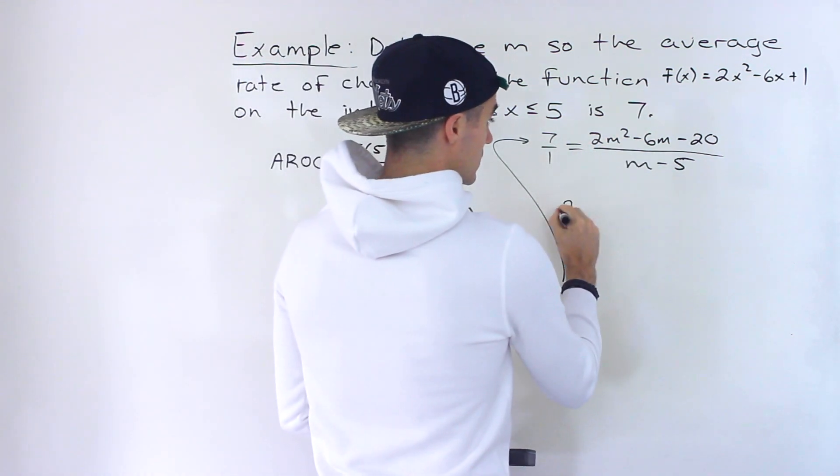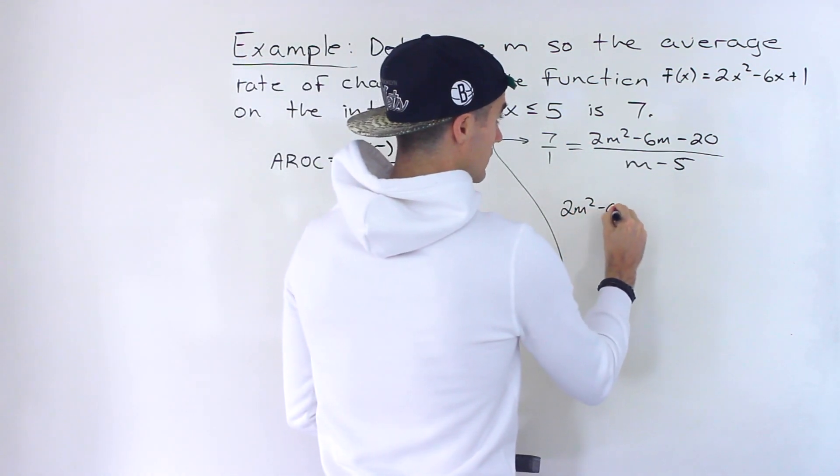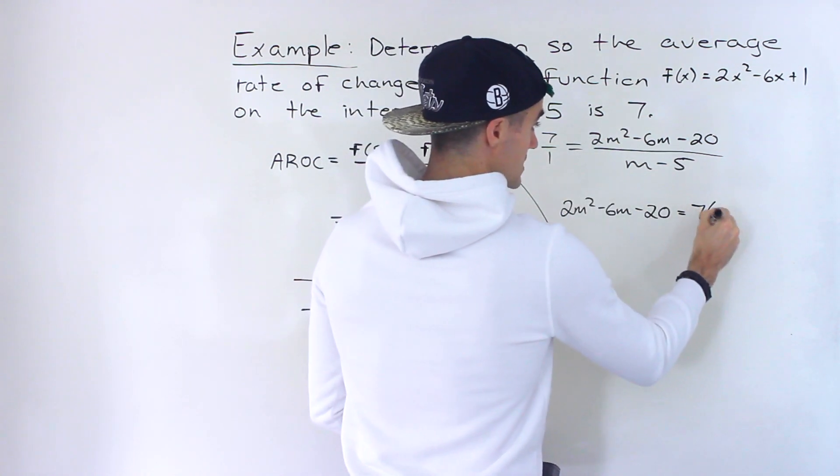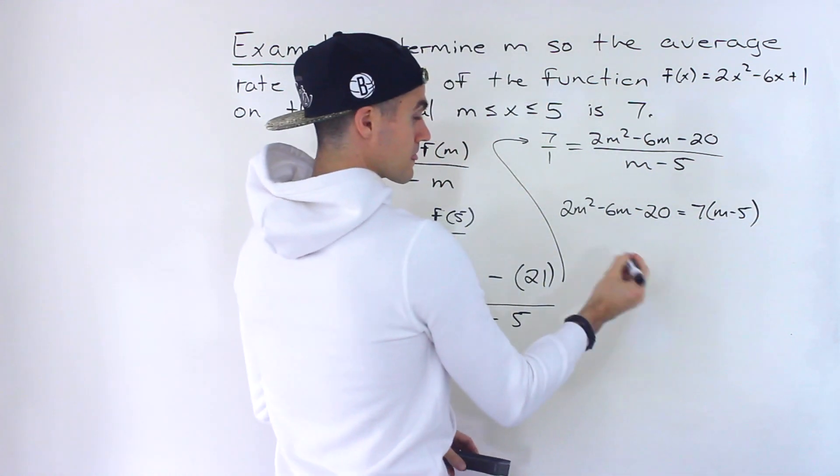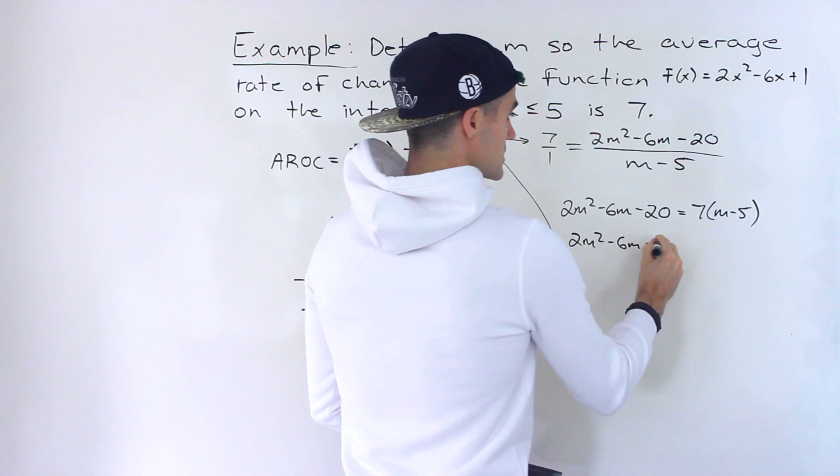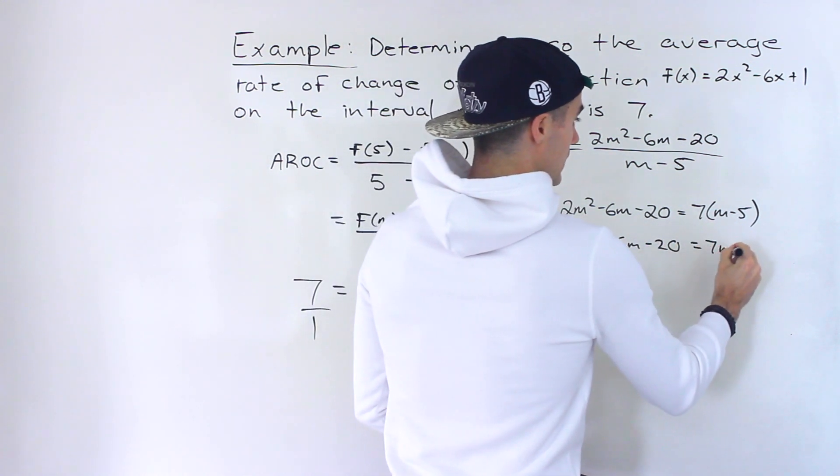And the reason why I put the 7 over 1 because now we could cross multiply. So 1 times this would just give us that. And then we'll have 7 times m - 5, like that.